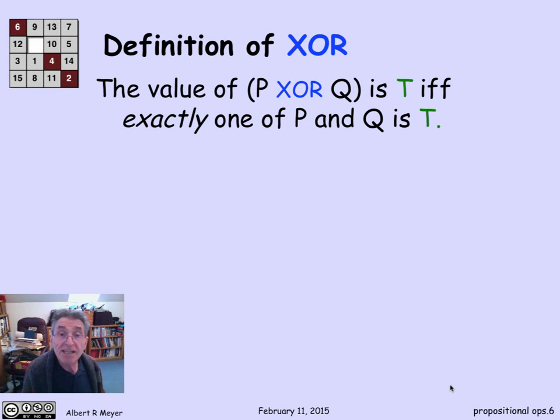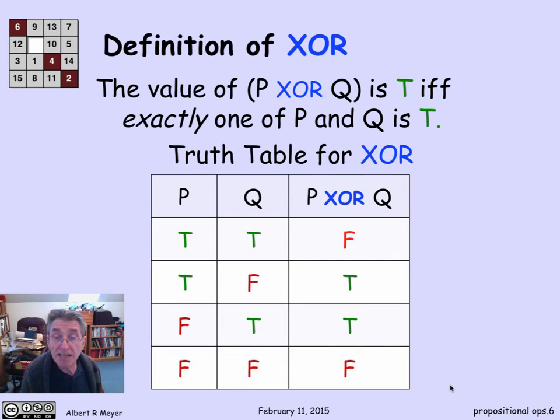For XOR, as we said, P XOR Q is true if and only if exactly one of P and Q is true. If I was expressing that as a truth table, we'd see that where there's TT, it's false, and where there's FF, it's false, because it's not the case in either of those two rows that exactly one is true. But the middle rows, exactly one is true, and so P XOR Q is true. This truth table is just a precise way of defining how XOR acts on truth values.